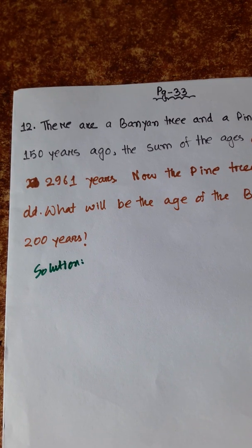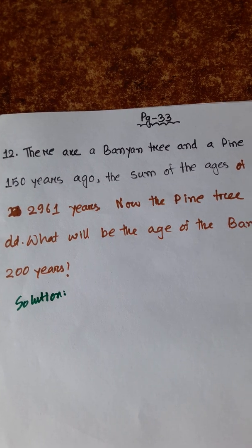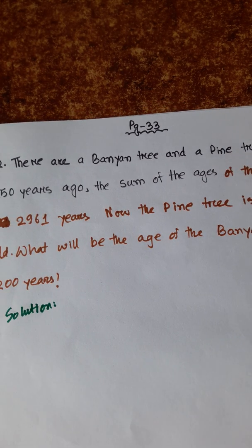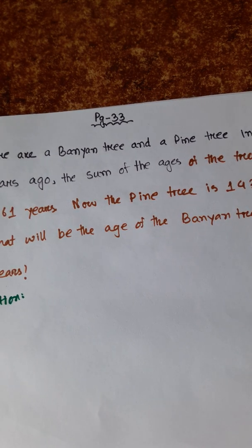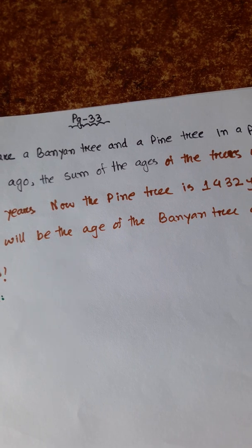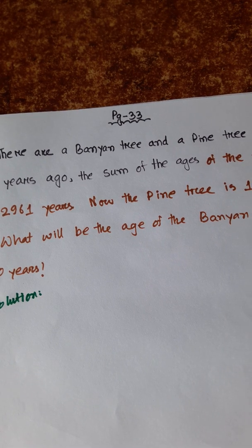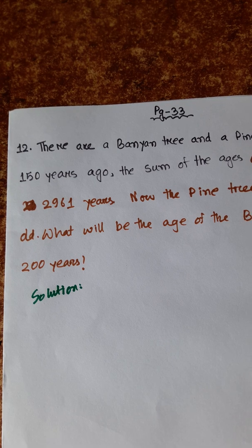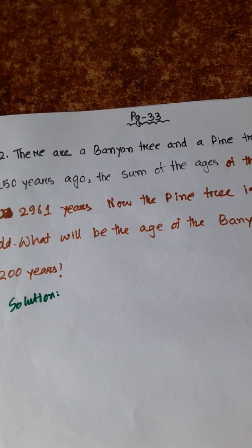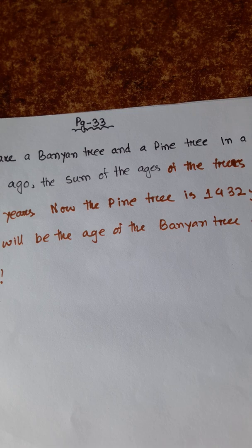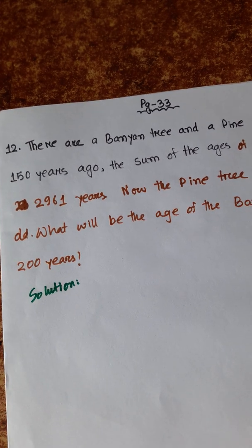Now the last problem, number 12. There are a Banyan tree and a Pine tree in a park. 150 years ago, the sum of the ages of the trees was 2,961 years. Now the Pine tree is 1,432 years old. What will be the age of the Banyan tree after 200 years? According to the question...